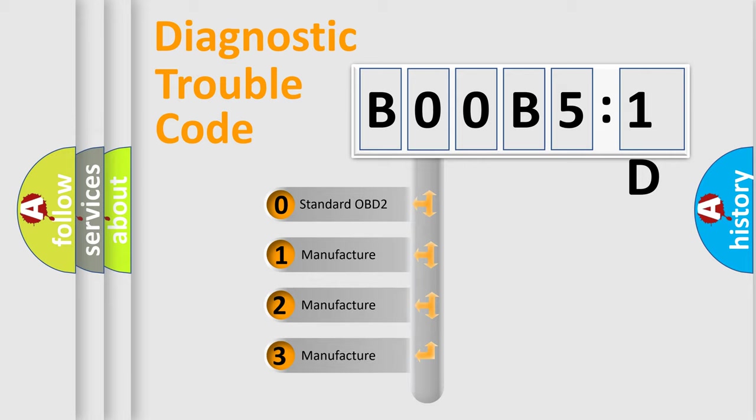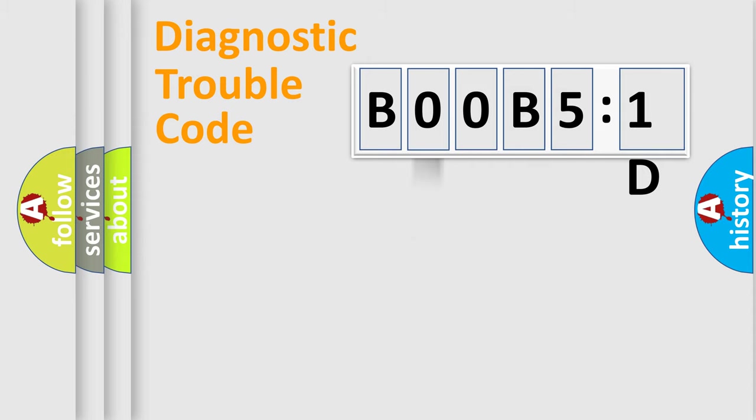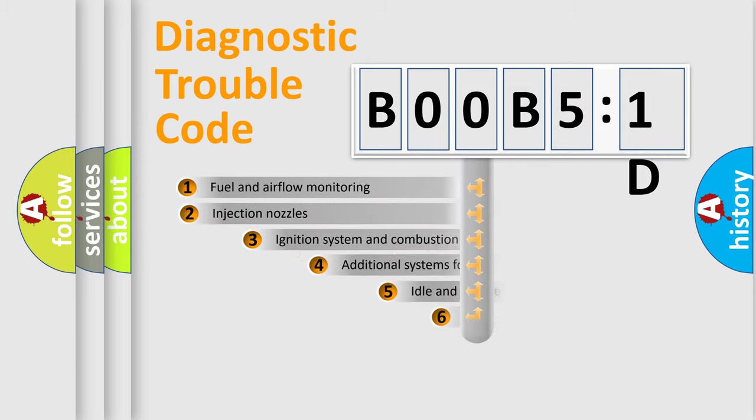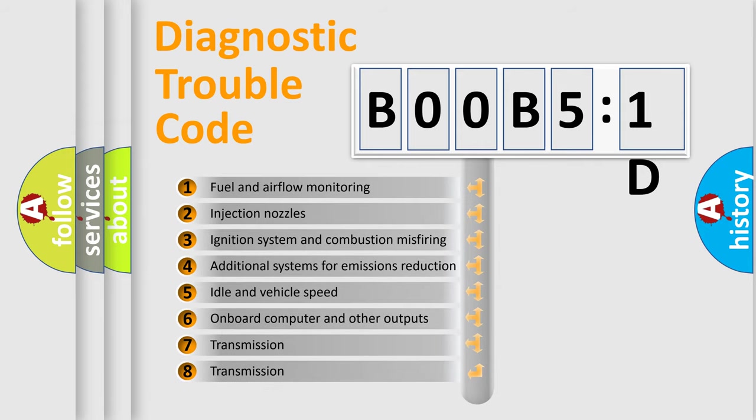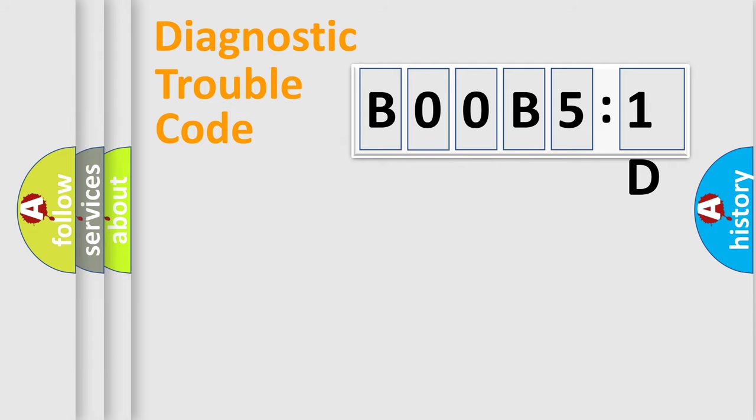If the second character is expressed as zero, it is a standardized error. In the case of numbers 1, 2, 3, it is a more prestigious expression of the car-specific error. The third character specifies a subset of errors. The distribution shown is valid only for the standardized DTC code. Only the last two characters define the specific fault of the group.